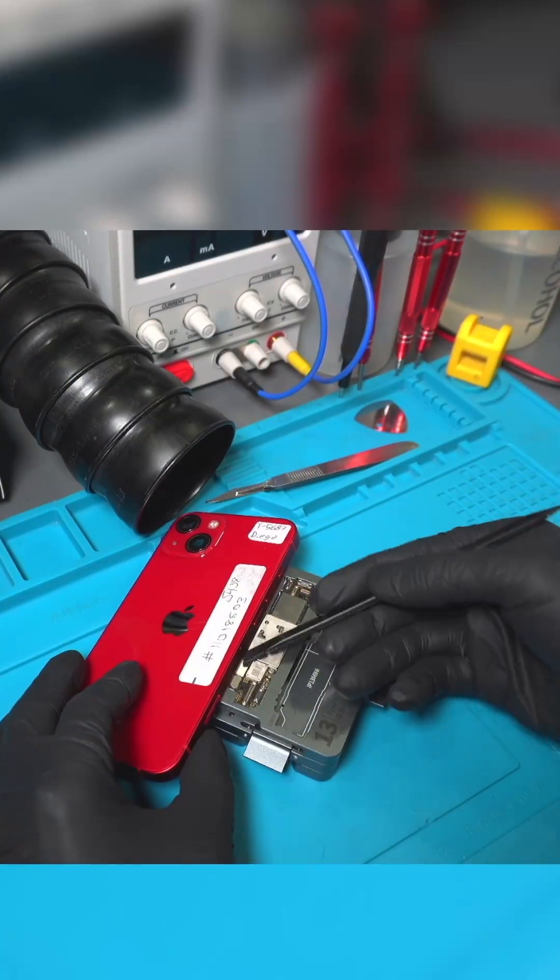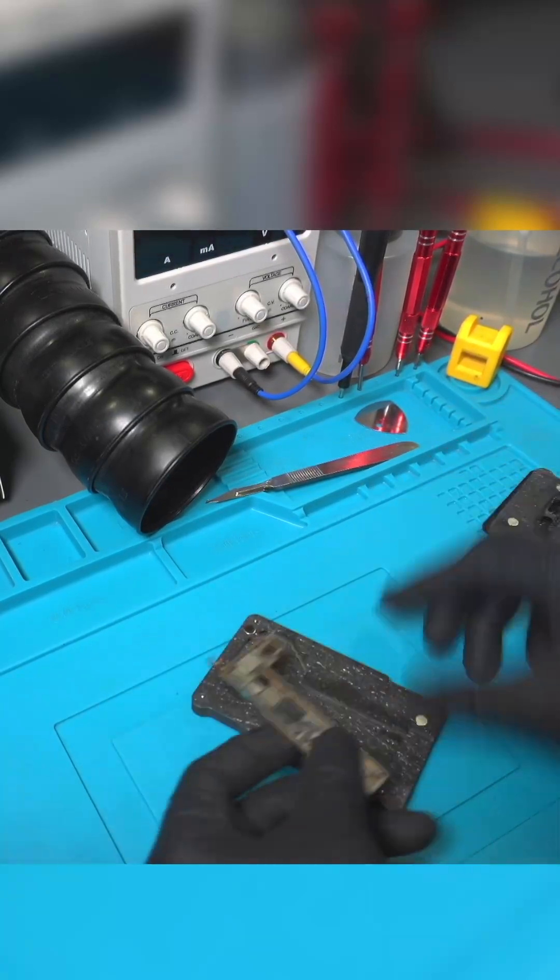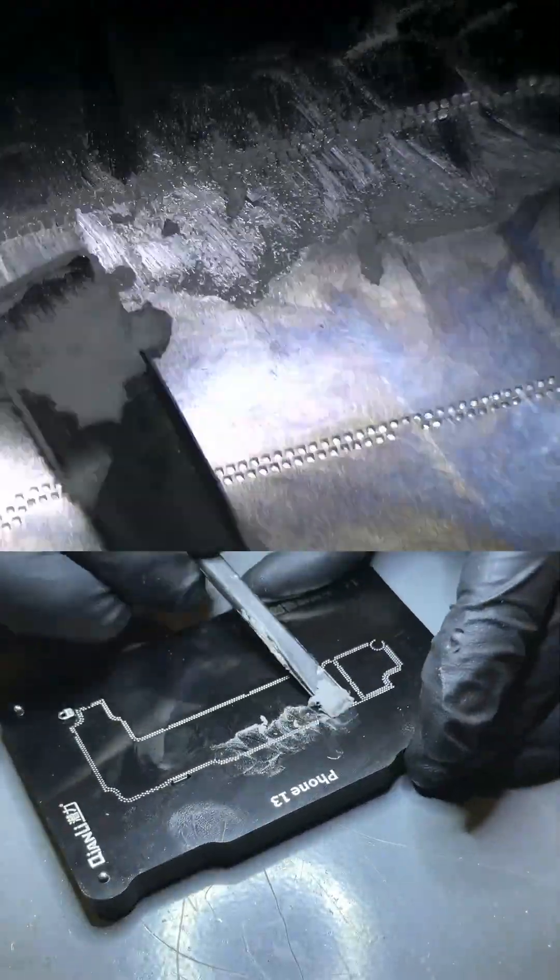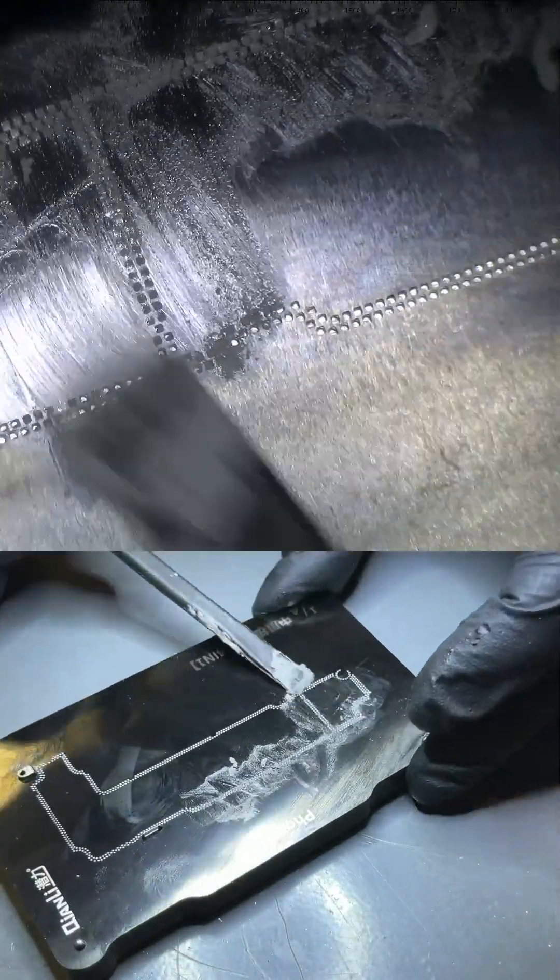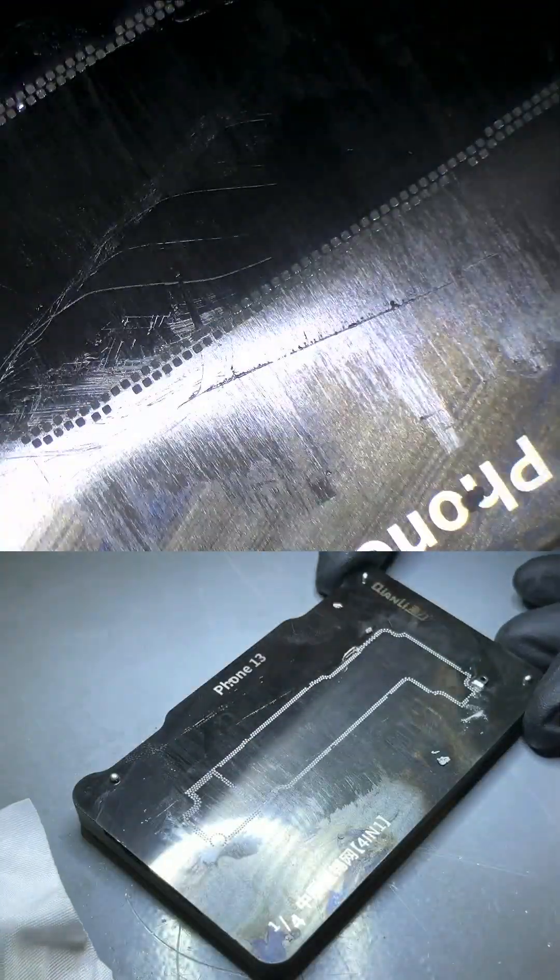Our next step will be to re-solder the motherboards together. We are going to use this stencil for the iPhone 12, which will help us reconstruct the solder balls. We apply solder paste on the stencil, making sure to fill in all of the holes. We clean the leftover residue with the tip of the blade.